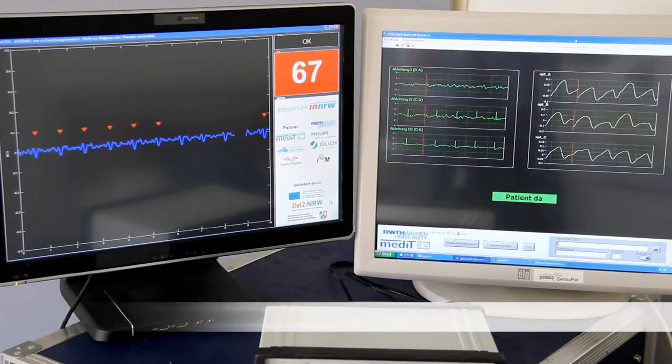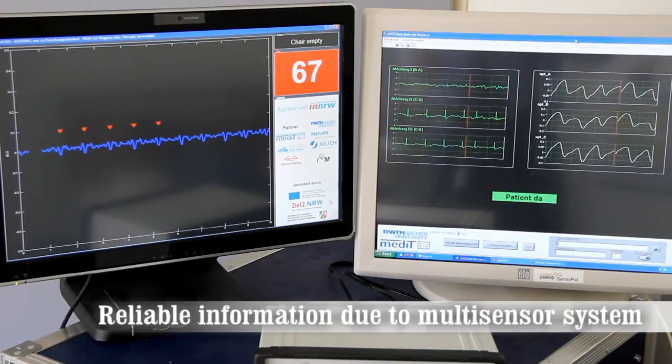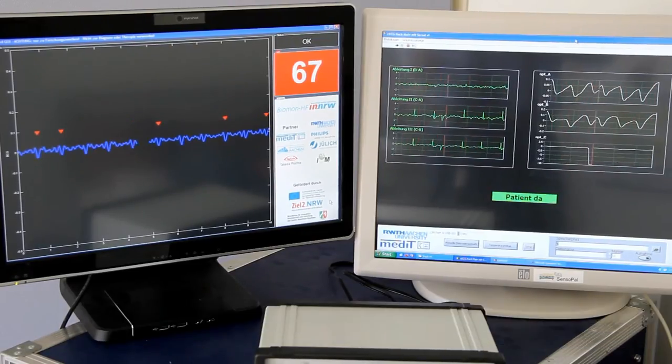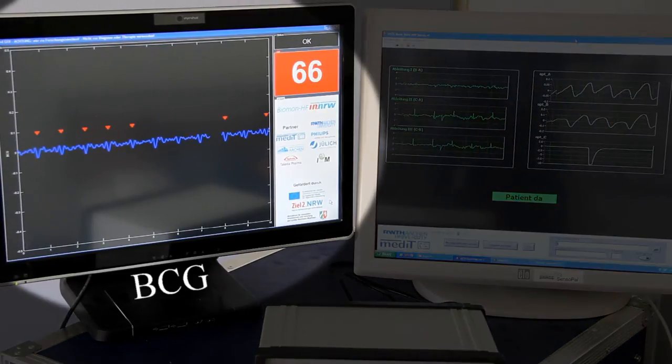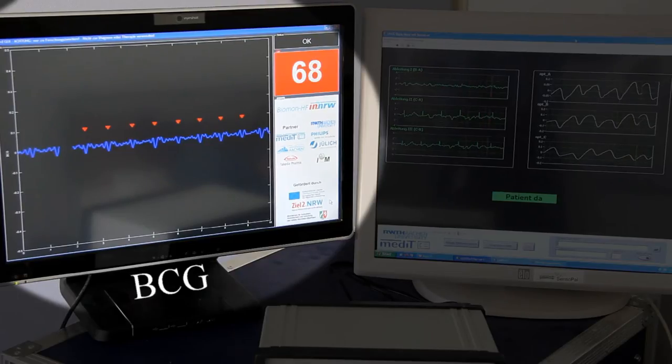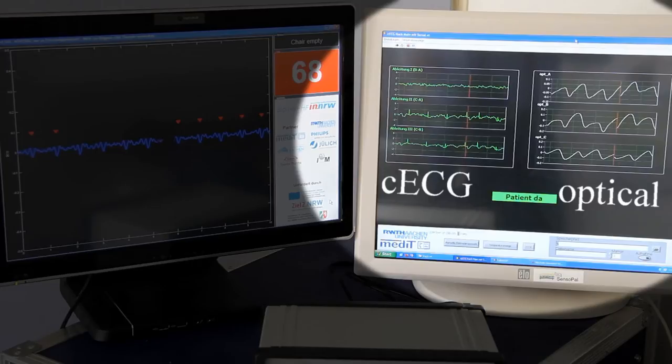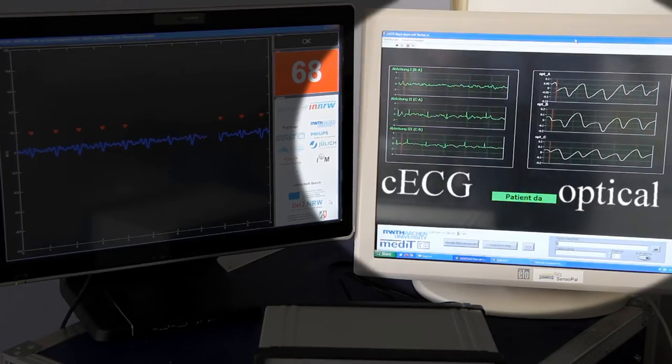In our research prototype, we utilize multiple different sensing approaches to achieve reliable and robust vital signs measurements. On the one hand, we detect the mechanical vibrations caused by the beating of the heart, the so-called ballistocardiogram or BCG. On the other hand, capacitive electrocardiogram, CECG, and optical sensors are used.